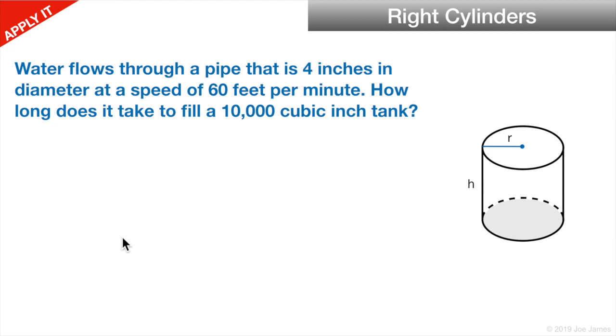Let's do a practice problem. This is a real application of volume of a cylinder. Water flows through a pipe that is 4 inches in diameter. Well, radius is what we're usually going to use for all these formulas, so that's going to be 2 inches radius. At a speed of 60 feet per minute, how long does it take to fill a 10,000 cubic inch tank? We probably want to get this in seconds. We know our formula for volume is π r² h. But what is h? We need to somehow break this 60 feet per minute down to a right cylinder with a defined height, so that we can calculate the volume and figure out how much volume is flowing per second.